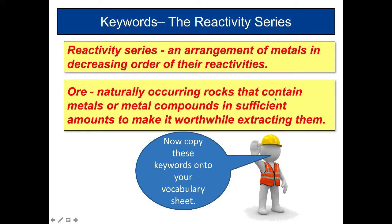Time for keywords. The reactivity series is an arrangement of metals in decreasing order of their reactivity, most reactive at the top, least at the bottom. An ore is a naturally occurring rock that contains metals or metal compounds in sufficient amounts — it's pointless to extract them if they're in tiny amounts; they've got to be worthwhile extracting. Copy these keywords now into your vocab sheet.